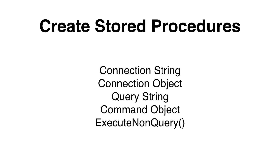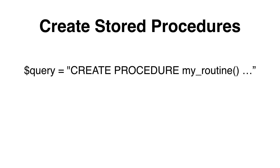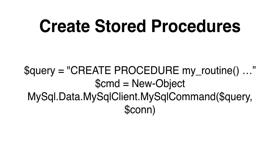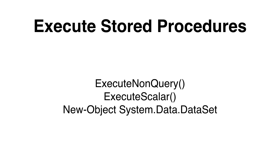To create and alter stored procedures, we again need all the components for the command object. With the command object, we can use the ExecuteNonQuery method to run our query. Here is an example of a CREATE PROCEDURE statement. We then create a command object variable and use the ExecuteNonQuery method to execute the query. If we would like to execute or call our stored procedure, we can use any one of the command object methods: ExecuteNonQuery, ExecuteScalar, or create a dataset, depending on what your procedure is set up to do.